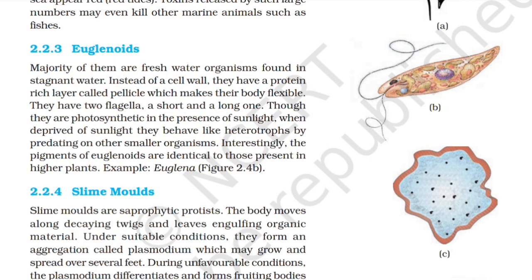2.2.3 Euglenoids. The majority of them are freshwater organisms found in stagnant water. Instead of a cell wall, they have a protein-rich layer called pellicle which makes their body flexible. They have two flagella — a short and a long one. Though they are photosynthetic in the presence of sunlight, when deprived of sunlight they behave like heterotrophs by predating on other small organisms. Interestingly, the pigments of euglenoids are identical to those present in higher plants.